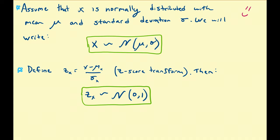Hello there. In the previous set of videos, we've mainly been focusing on normally distributed random variables. For example, if x is a normally distributed random variable coming from some population with mean mu and standard deviation sigma, then we typically write x is distributed according to N, which is an abbreviation for the normal distribution, with mean mu and standard deviation sigma. Some notations will use the variance sigma squared instead of sigma in this notation.